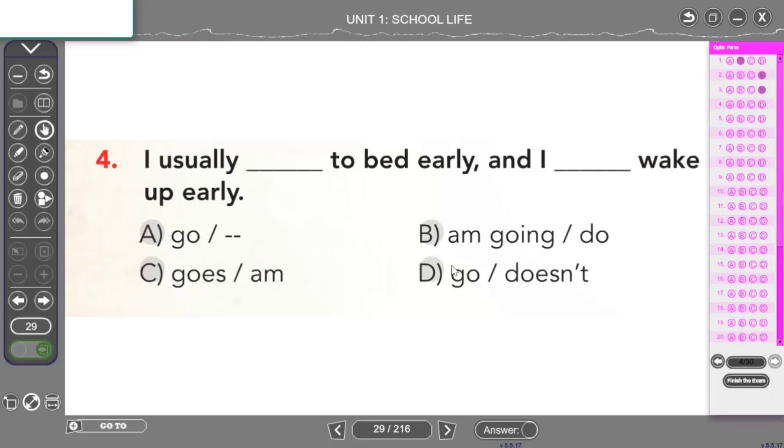Yani buraya ne getirmem gerekiyor? I usually go to bed early şeklinde fiilimi getirmem gerekiyor. A ve D şıkkında bu kullanımı görüyoruz. İkinci boşluğa bakmam gerekiyor. And I wake up early. Hatırlayalım. Geniş zamanda olumlu cümlede öznemden hemen sonra ne getirmem lazımdı? Fiilimi getirmem lazımdı. Yani bu boşluğa yazabileceğim herhangi bir yapı yok. Direkt olarak I wake up şeklinde cümlemi kurmam gerekir. O yüzden bu boşluk boş kalacak. Cevabım da A olacak. I usually go to bed early. And I wake up early. Bu şekilde cümlemizi çevirebiliriz.